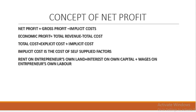Net profit is equal to gross profit minus implicit cost. Explicit costs are the out-of-pocket costs paid in actual terms, whereas implicit cost is not paid to anyone — it is the cost of self-supplied factors. For example, the entrepreneur may be using his own building or his own money in the business. We calculate the implicit cost of self-supplied factors to know the true cost of production. Net profit equals gross profit minus implicit cost, i.e., total revenue minus total cost (explicit plus implicit). This gives us the economic profit or pure profit, accounting for items like rent on the entrepreneur's own land, interest on own capital, and wages on own labor.